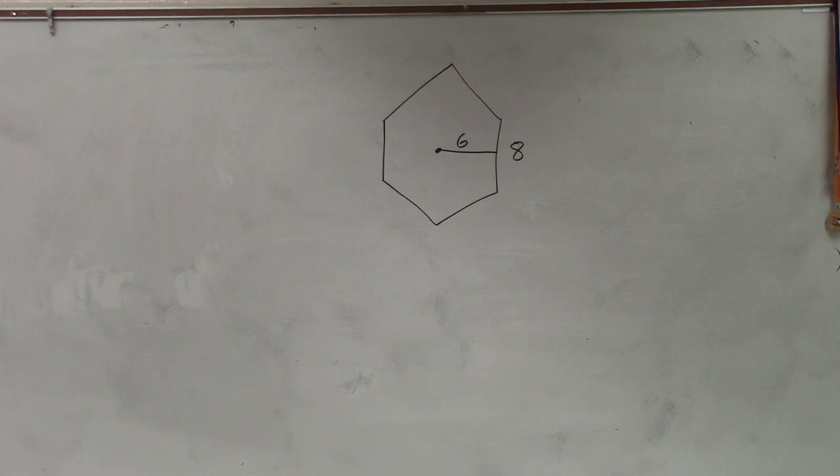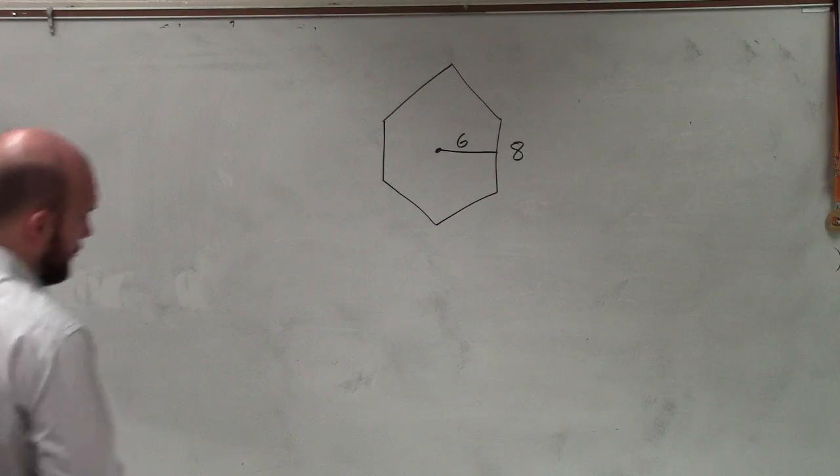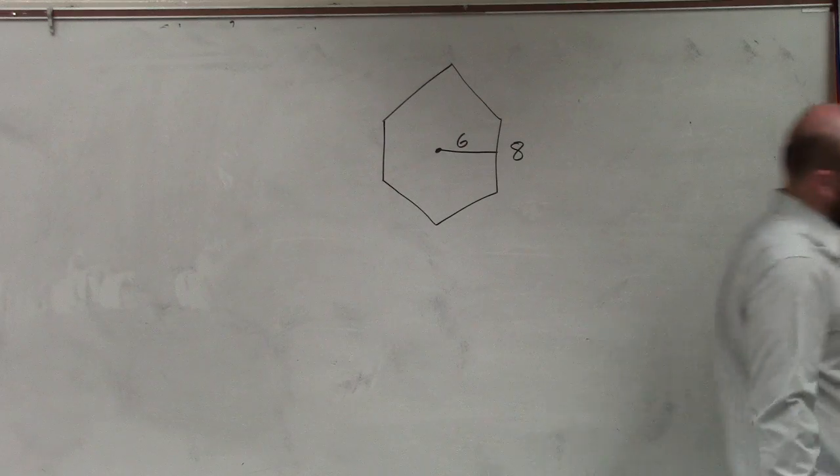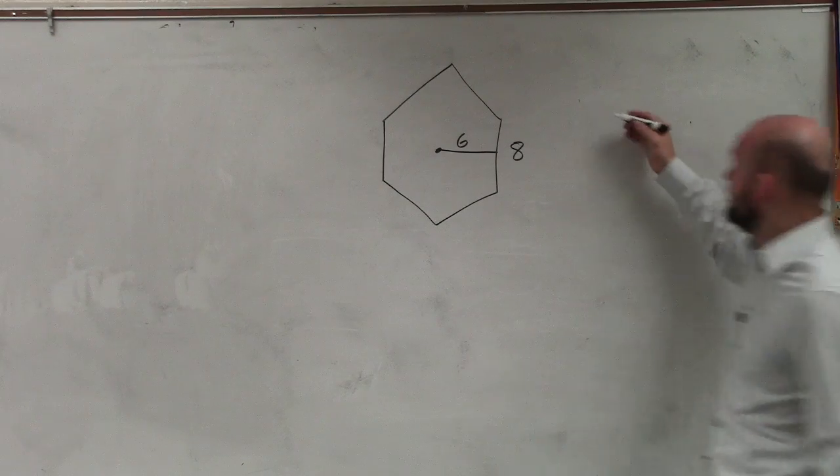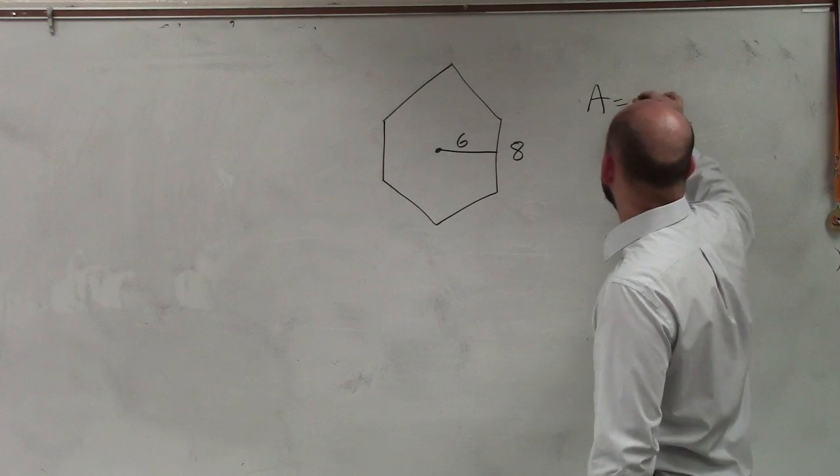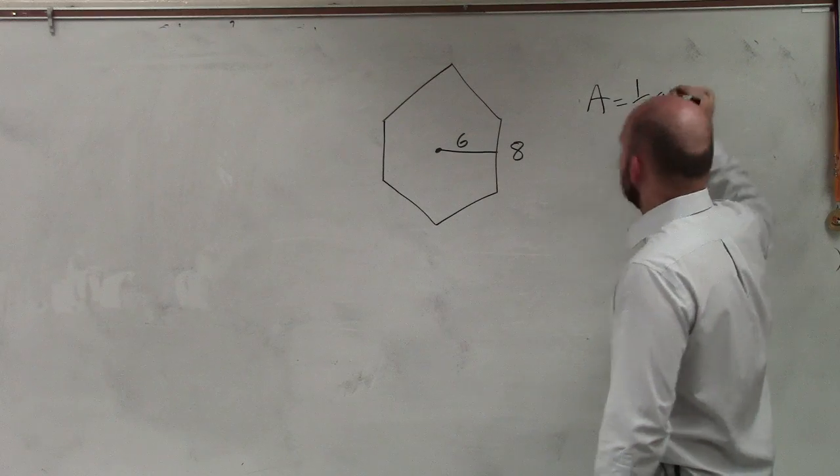So for a problem like this, all the formula that I provided you guys to do on a problem like this where we're trying to find the area, is going to be an area of any regular polygon equals one-half a times p.